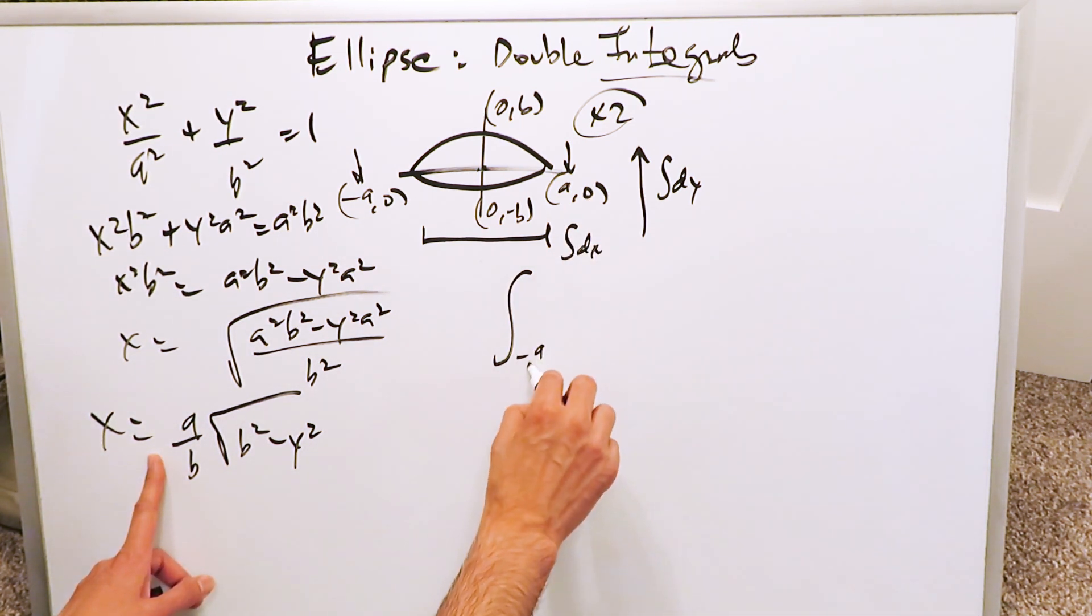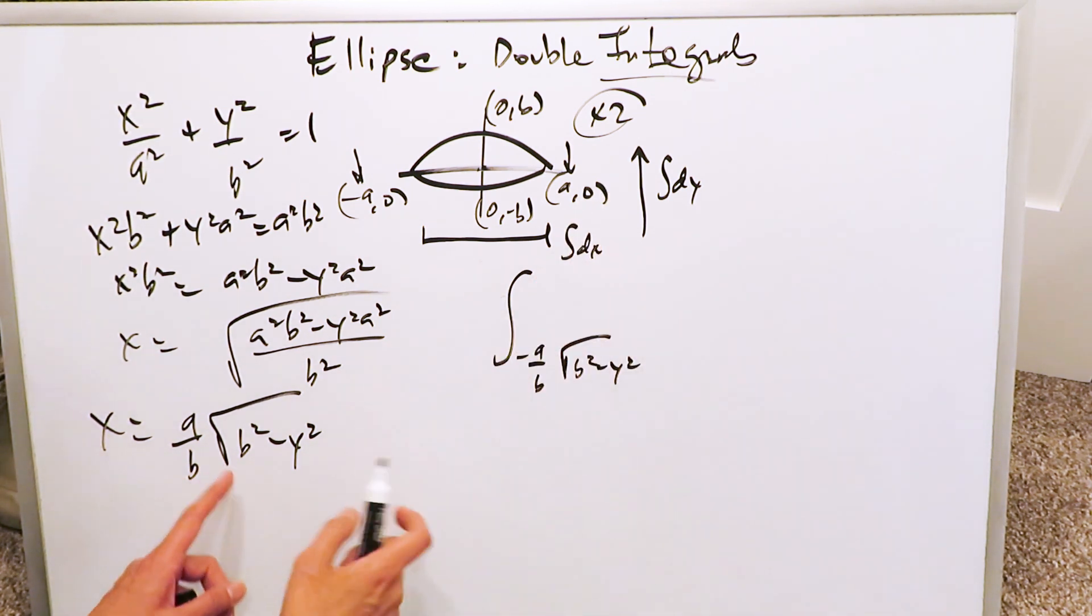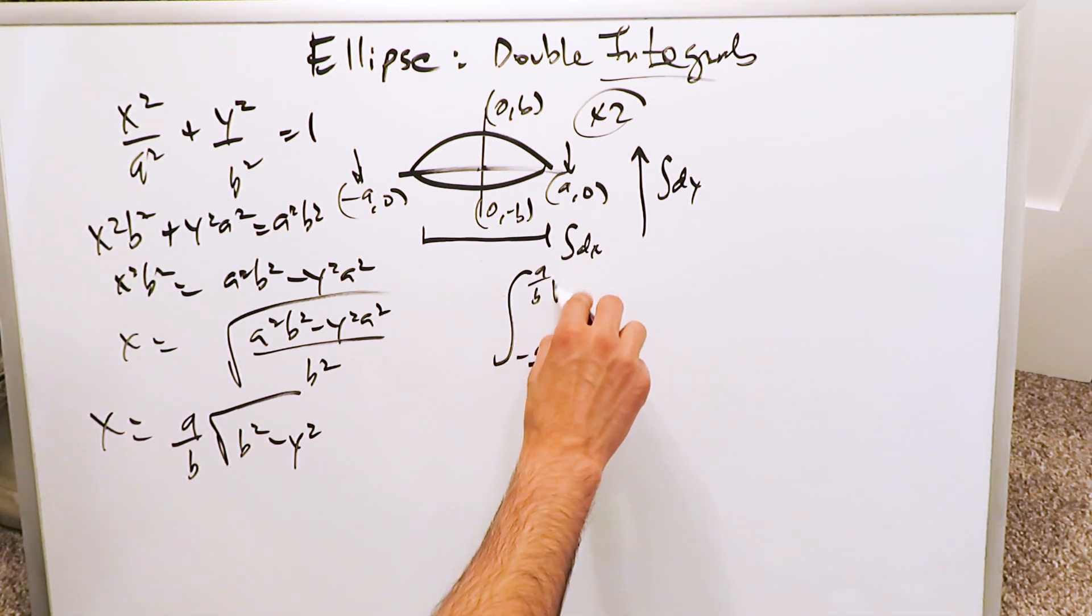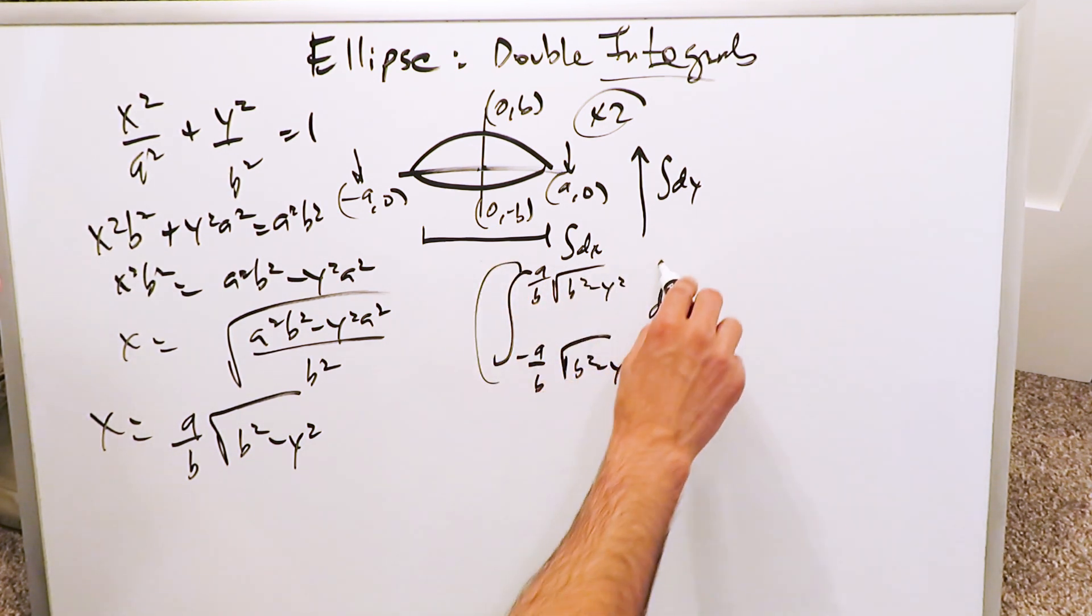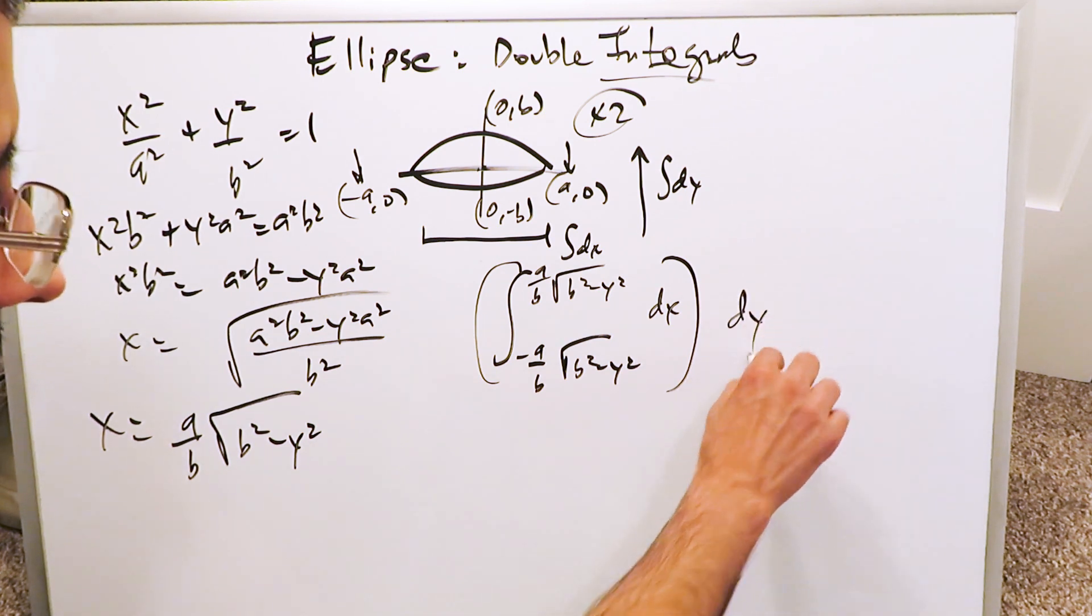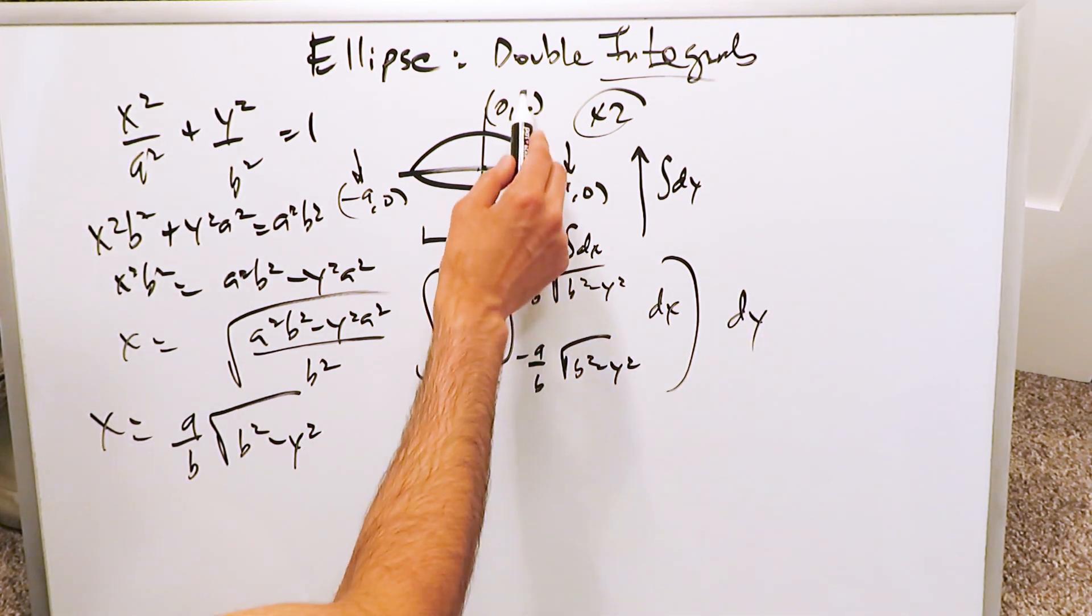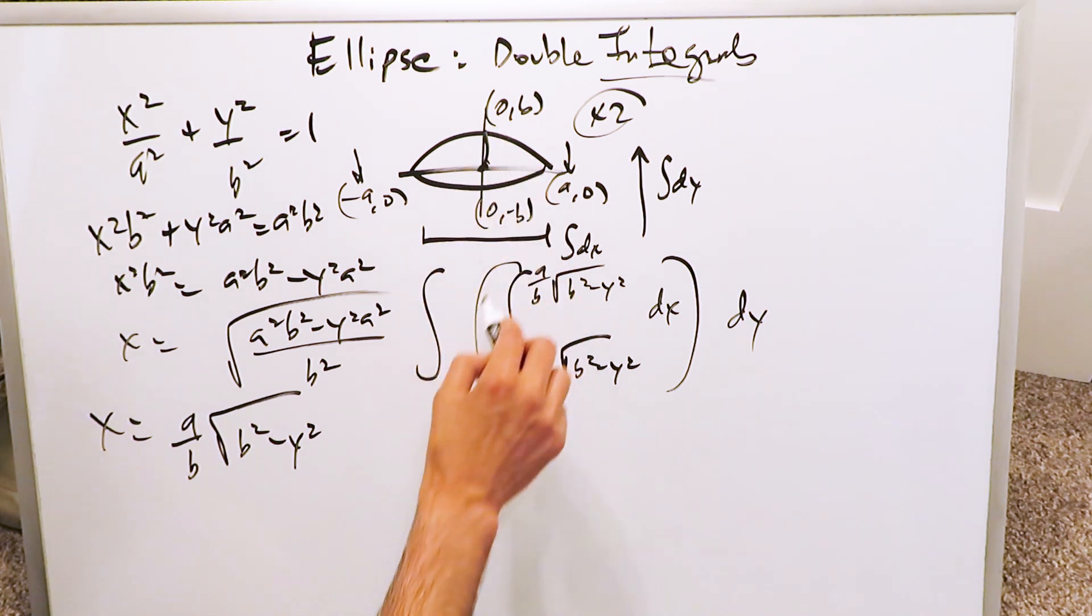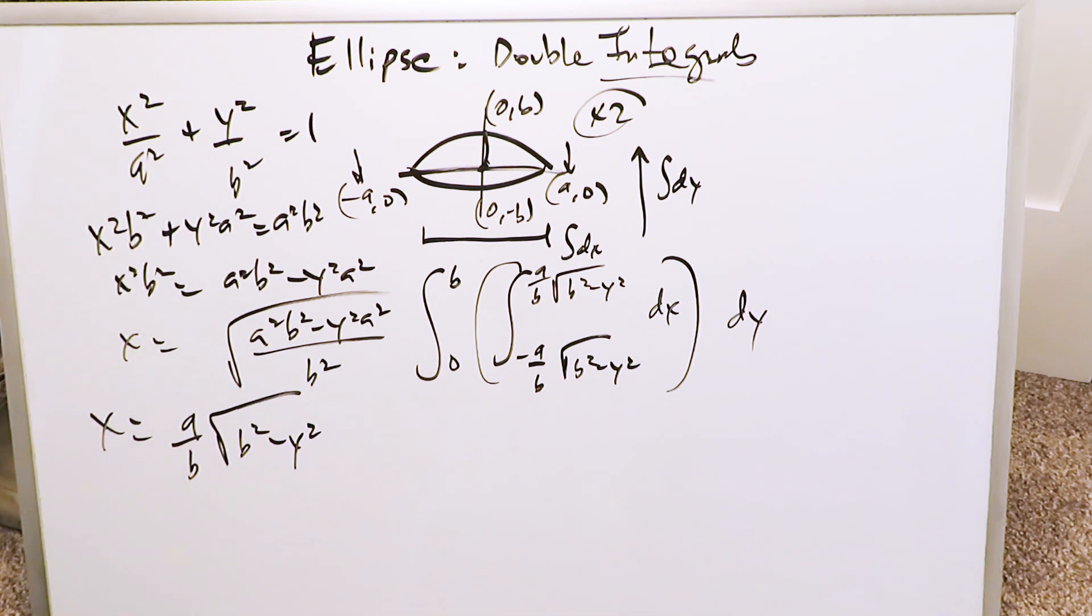Well, this one will become here minus a over b root b squared minus y squared. The a comma 0 will just be here the positive counterpart of it, a over b times b squared minus y squared with respect to dx. All of this now will integrate upwards with respect to dy, but what is your interval? It's not minus b to b. It's right here from 0 up to b because we already know we're looking at half by means of the radical if you had solved for y equals format. So we have to multiply everything by 2, and I can bring that 2 right over here now.